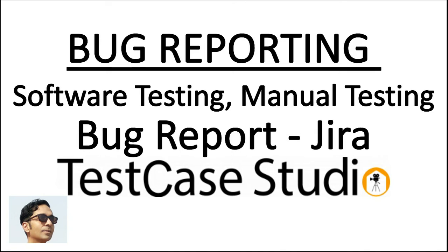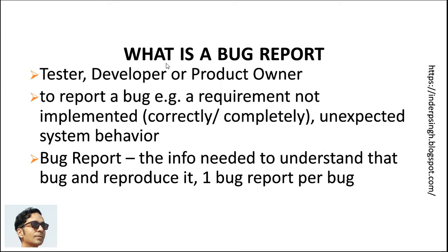Welcome to this software testing tutorial on bug report and bug reporting in software testing. I will show you how to write a bug report in manual testing automatically using a tool, and I will also explain bug reporting in Jira. A bug report or defect report is needed to report or document a bug. Examples of bugs include a requirement not implemented in the system, not implemented correctly or completely, or unexpected system behavior. A bug report contains the information needed by the developer to understand and reproduce the bug so that he can fix it.